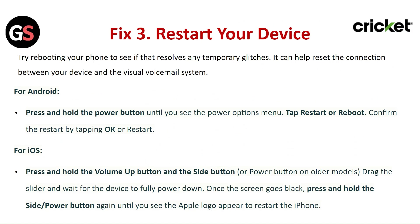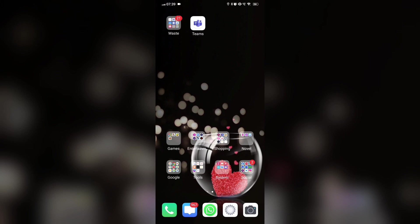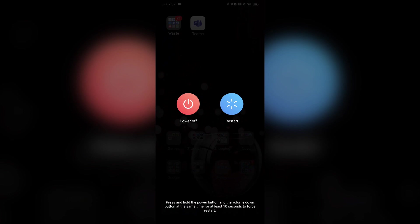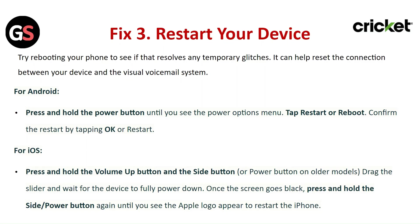Fix 3: Restart your device. Try rebooting your phone to see if that resolves any temporary glitches — it can help reset the connection between your device and the network. For Android, press and hold the Power button until you see the Power Options menu, tap Restart or Reboot, then confirm by tapping OK or Restart.